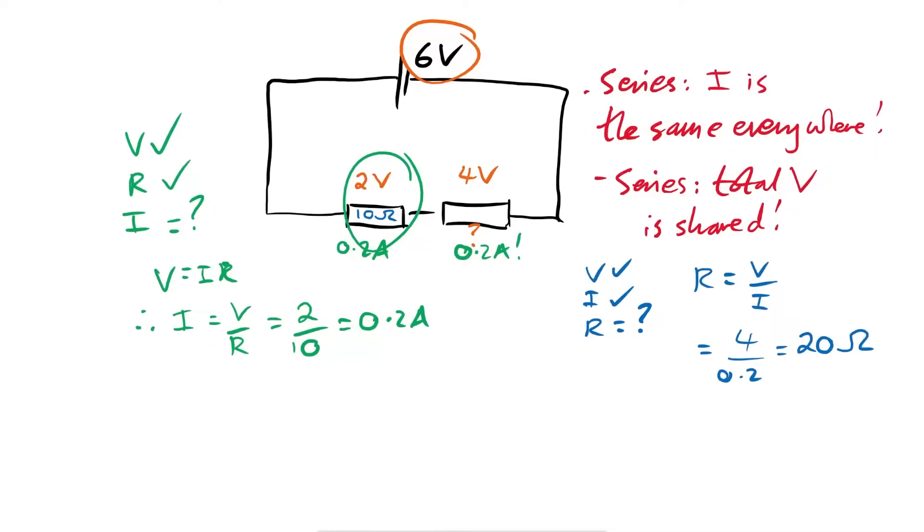Now you might well have been able to predict that just looking at the numbers but it's not always nice numbers like that. And so these rules are super important. Knowing these rules will allow you to say I found out something for one component, I can therefore use that for another component. In this case it was the current that was the same for both. Let's look at another circuit.